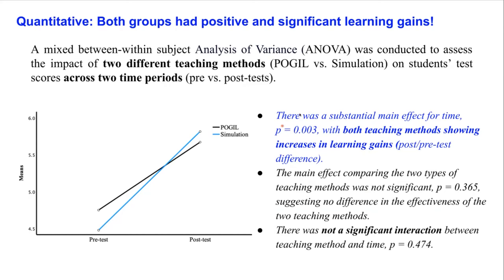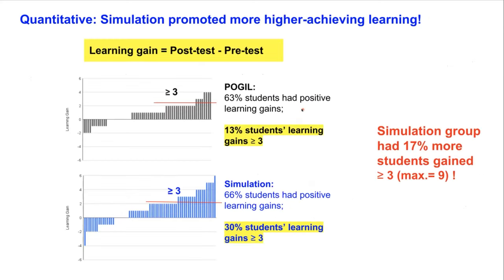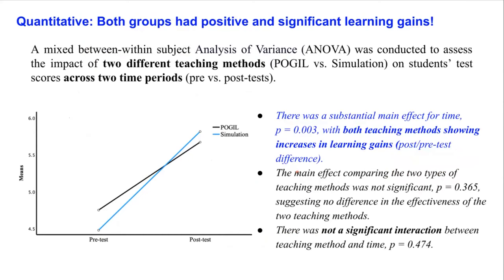The more interesting finding came when we looked at the distribution bar graph, where each bar represents one student. Both the simulation and POGIL groups had a relatively similar percentage of students with positive learning gains — about 60%. However, when we looked at students who gained three or more questions correct (out of nine), the simulation group had 17% more students achieving that threshold. This shows that simulation can engage students at a higher level of learning.